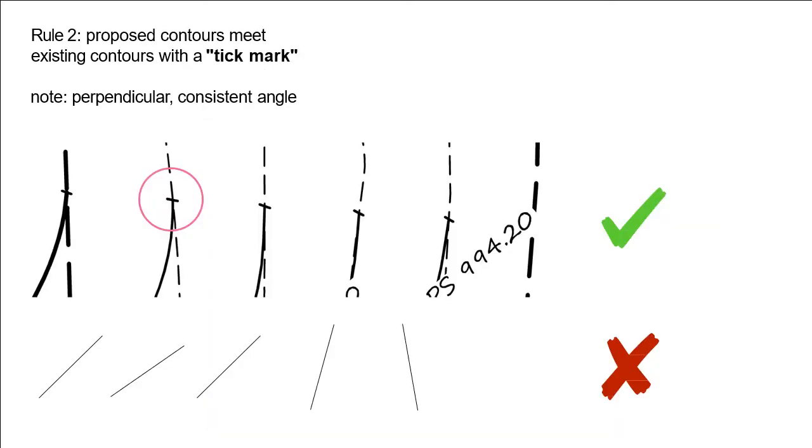Rule number two, whenever you are joining an existing contour to a proposed contour, you have to put in a tick mark. This tick mark shows the contractor where the limits of work are, and they will not move their equipment beyond these tick marks. Also, please note that these tick marks are to be perpendicular to the contours as they join.